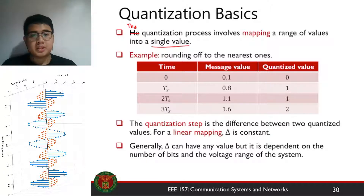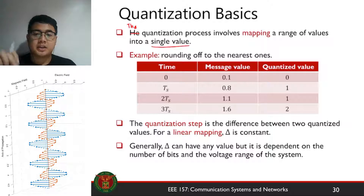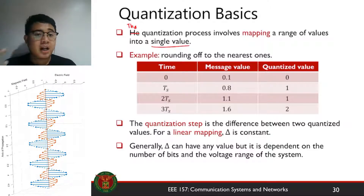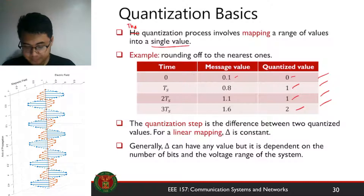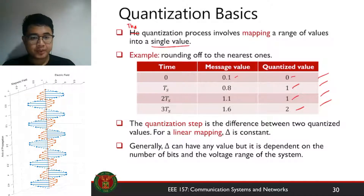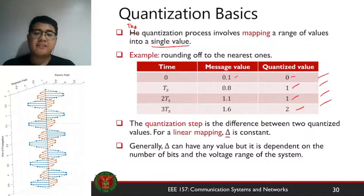The simplest example of quantization is rounding off to the nearest ones. You round off the signal based on its current value. So if your signal falls between negative 0.4 to positive 0.4, the quantized value would be zero. For example, a message value of 0.1 rounded off gives a quantized value of zero; 0.8 rounded off gives one; 1.1 rounded off gives one; 1.6 rounded off gives two. The quantization step is the difference between two quantized values, and with linear mapping, the quantization step delta is constant.